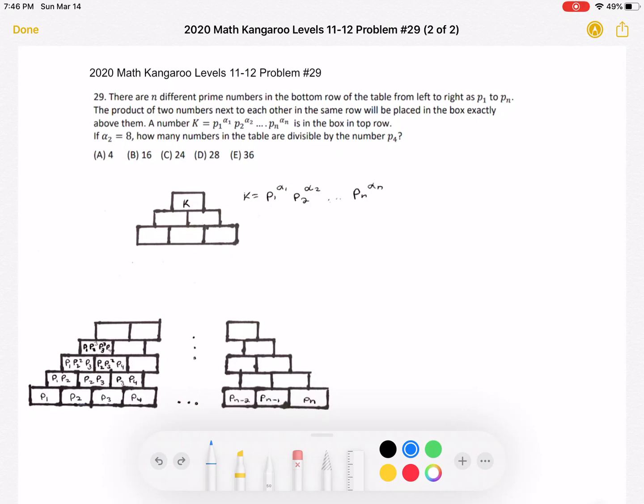And let's do a few rows in order to figure out what's going on in our table. So again, we start with this bottom row as given to us in the problem, P1, P2, P3, P4, so on until Pn. And we know that the product of two numbers next to each other in the same row is placed in the box exactly above them.